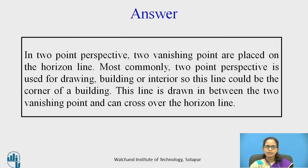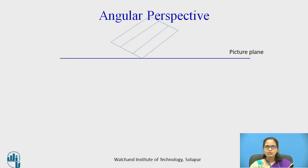The horizon line is the line on which the vanishing points are taken. As it is a two point perspective, you have two vanishing points, and all the orthogonal projections are joined to the vanishing points. The picture plane is the plane from where the observer is seeing the object. The longer dimension of the object is kept at an angle of 60 degrees, whereas the shorter edge of the object is kept at an angle of 30 degrees.